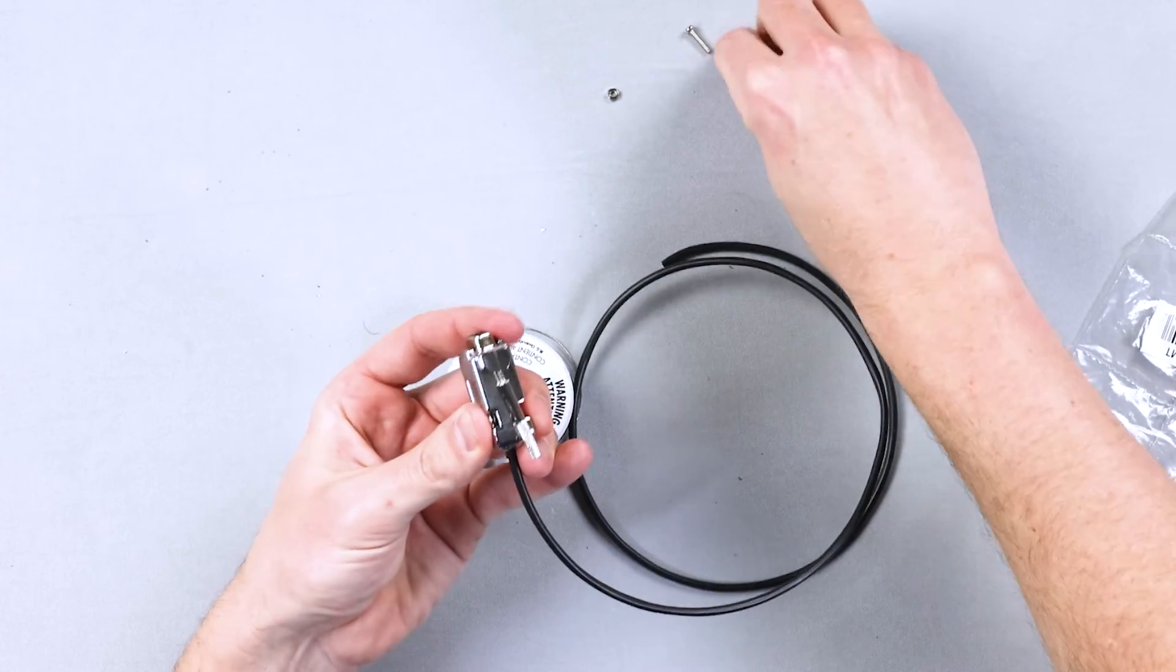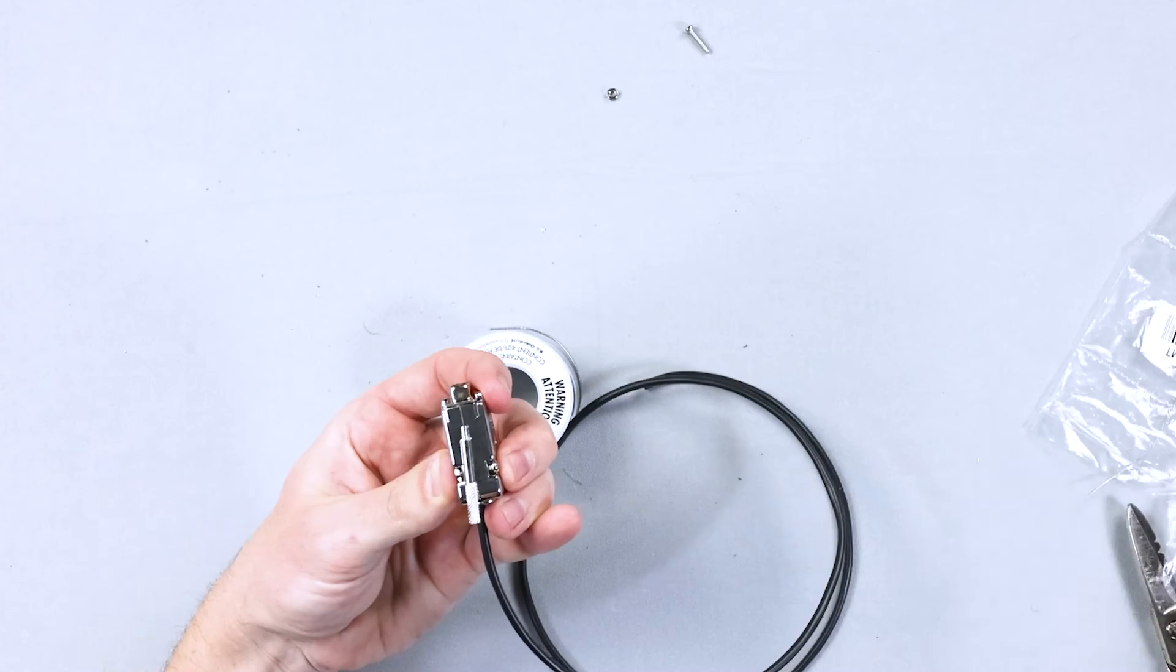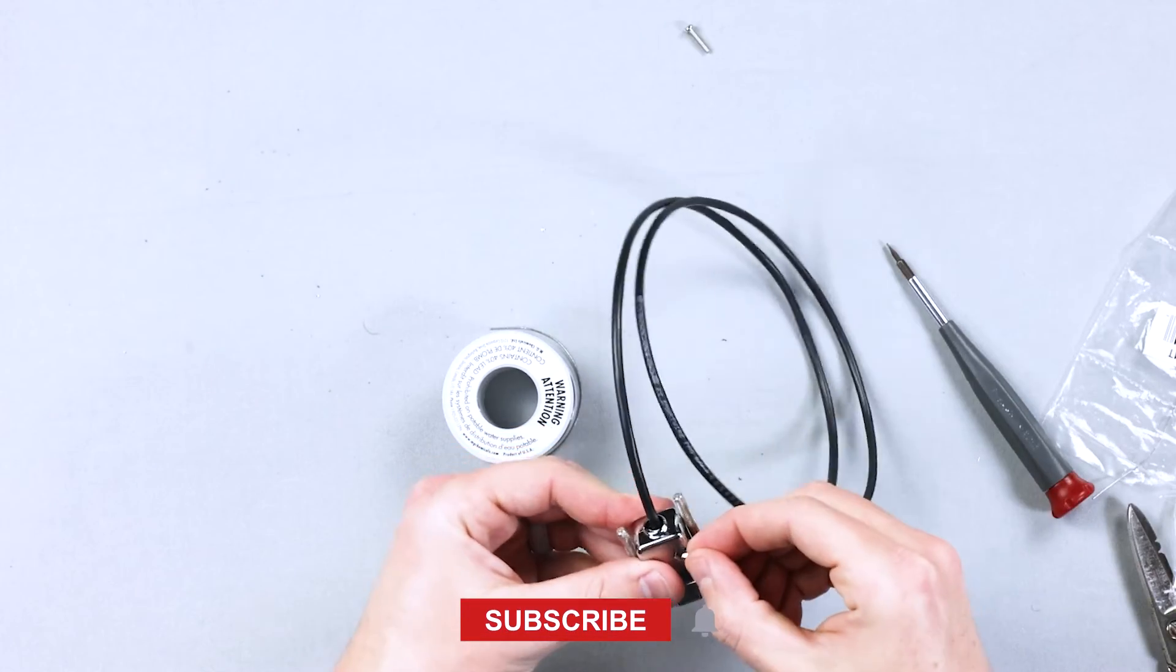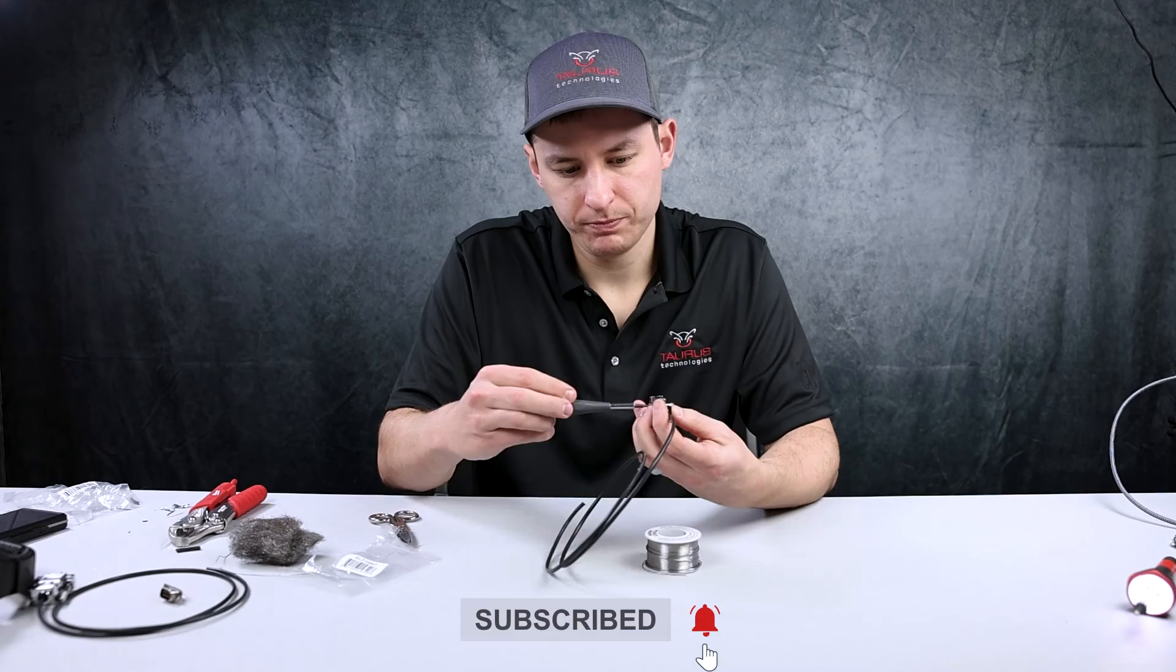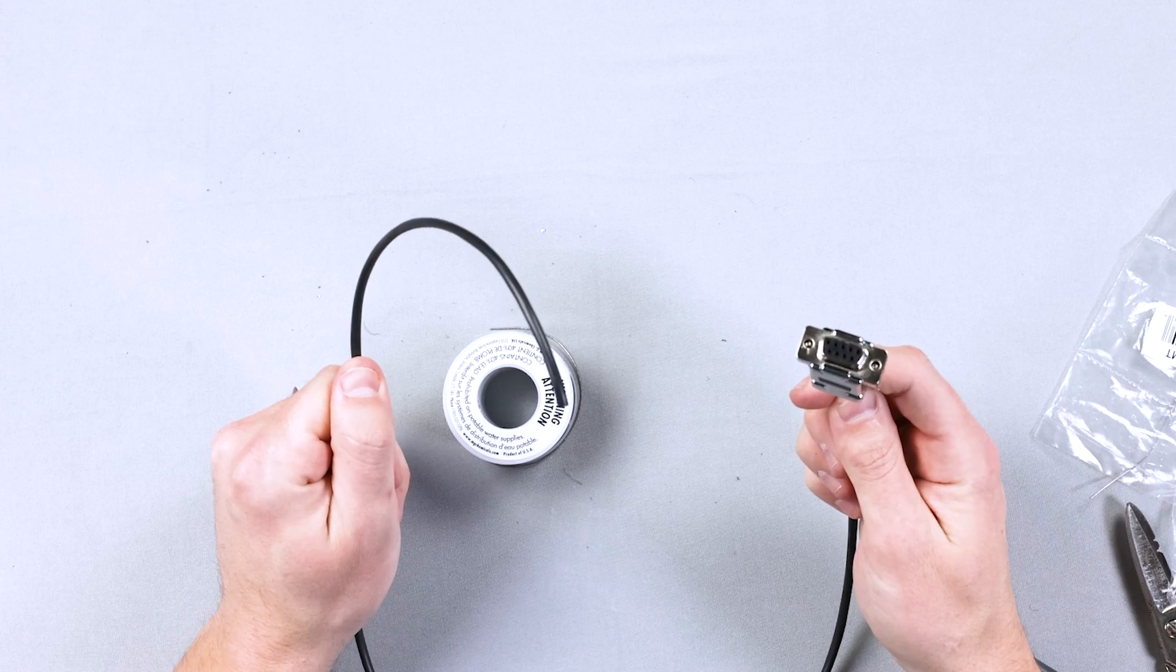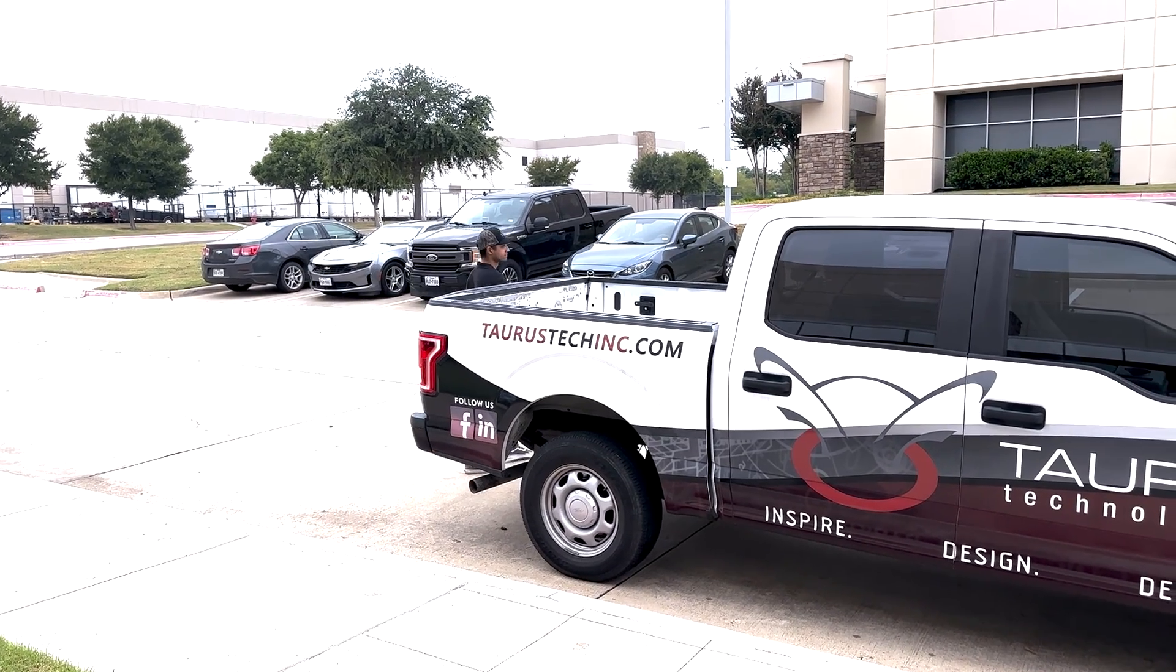And then we're going to drop in the nut, put our screw in, grab our tech driver, tighten it up, grab the other nut, grab the screw, tighten it up. And there you go. That is how you make a DB9. That'd look good in the back of my truck. All right. Thank you.